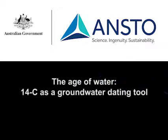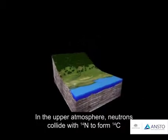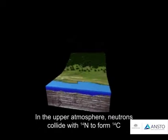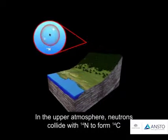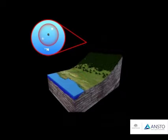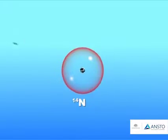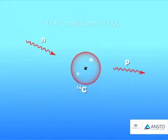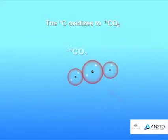The Age of Water: Carbon-14 as a groundwater dating tool. Carbon-14 atoms are generated in the upper atmosphere by bombardment of cosmic radiation on nitrogen atoms. The carbon-14 produced that way oxidises to CO2 and mixes with other gases.